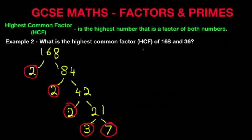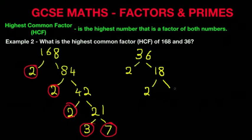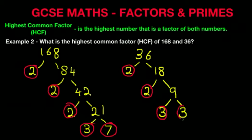That's the first one done. Now we will do number 36. Now 36 can be divided by 2, that leaves 18. 18 divided by 2 gives 9 and 2. And 9 is 3 times 3. So the prime factors of 36 are 2 times 2 times 3 times 3, which make 36.